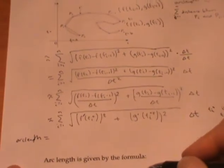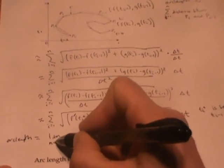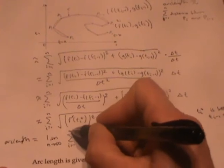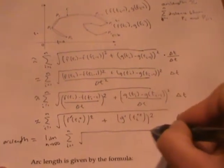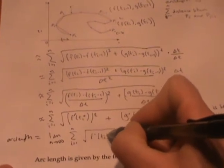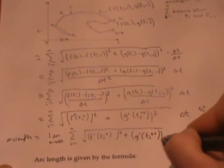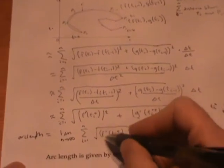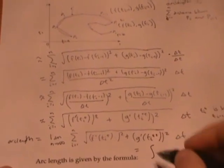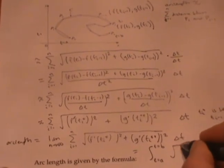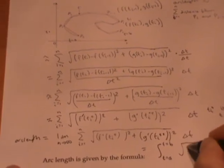as n goes to infinity, or as delta t goes to zero, of this Riemann sum. As usual, this limit becomes the integral from our starting point to our ending point of f prime of t squared plus g prime of t squared dt. So that's the arc length formula.